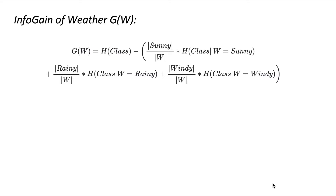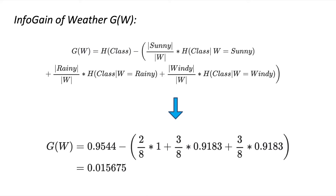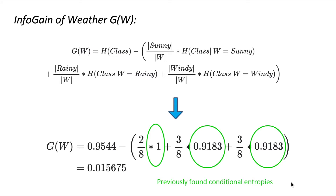Substituting these values, we obtain the information gain for weather. The weights applied to the conditional entropies come from the number of rows for each value of the variable. For example, two divided by eight is because we have two rows with sunny, three rows with windy, and three rows with rainy.